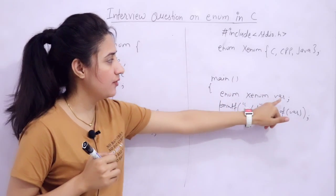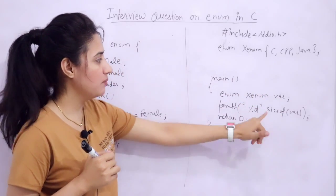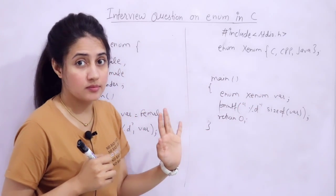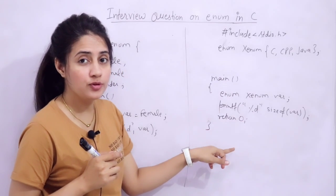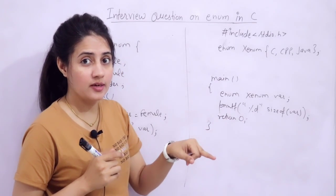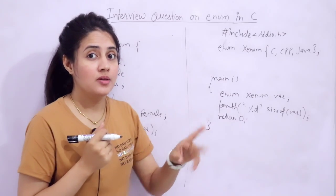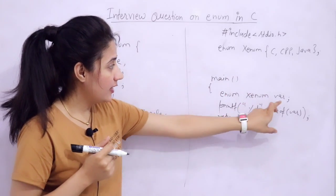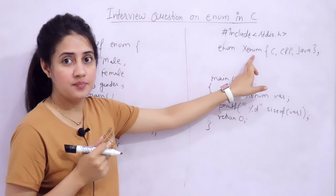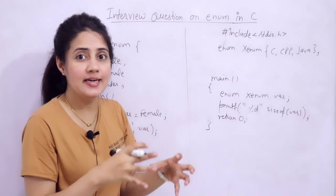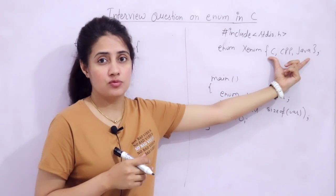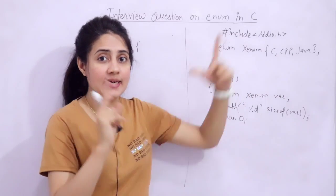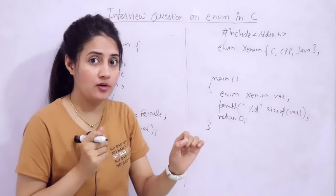In main function, I'm declaring a variable var of this data type and printing sizeof var. What output you will get here? Remember the property - whenever you declare a variable of this enum, at one time it can take only one value from these values, only one value at a time.